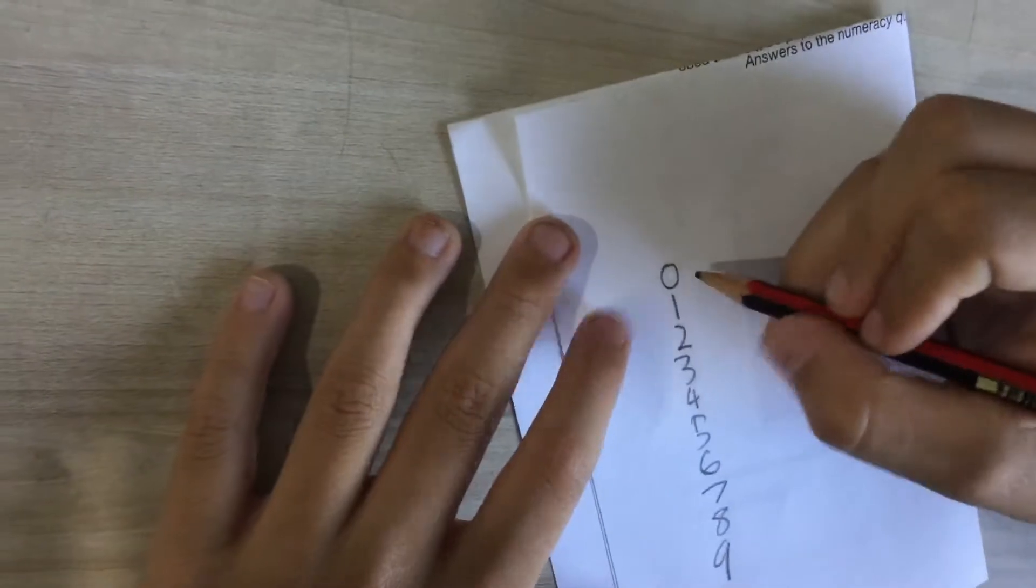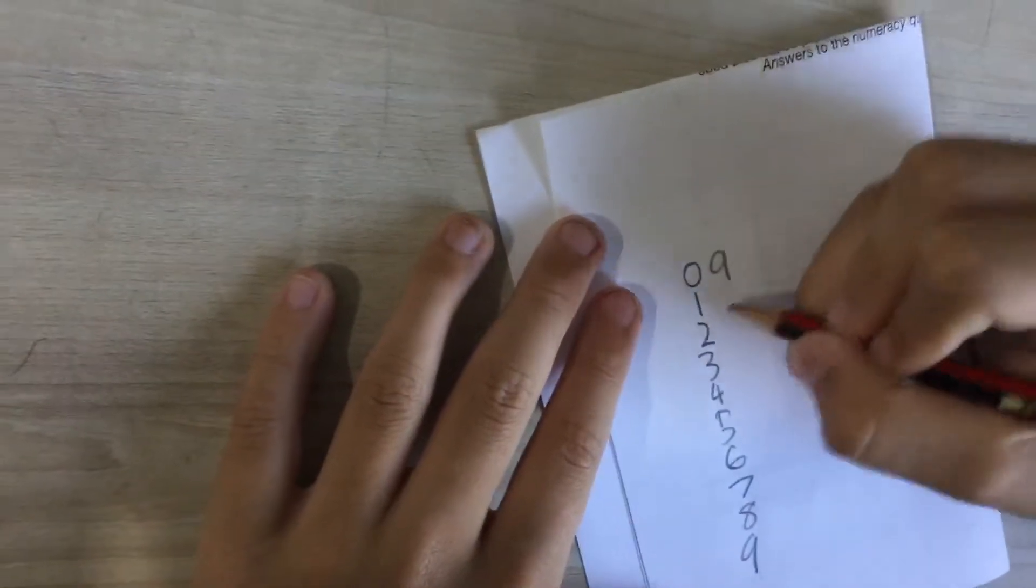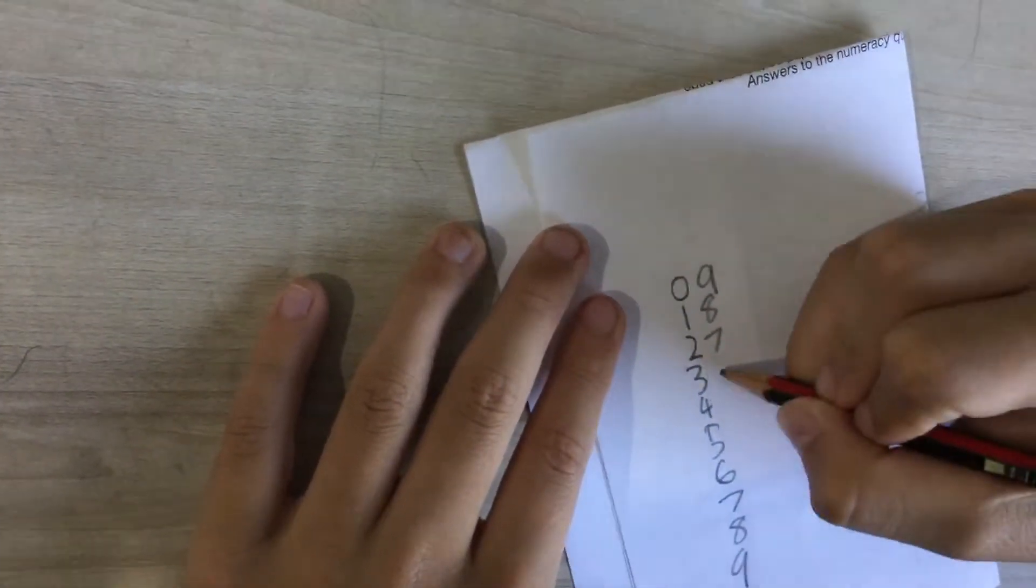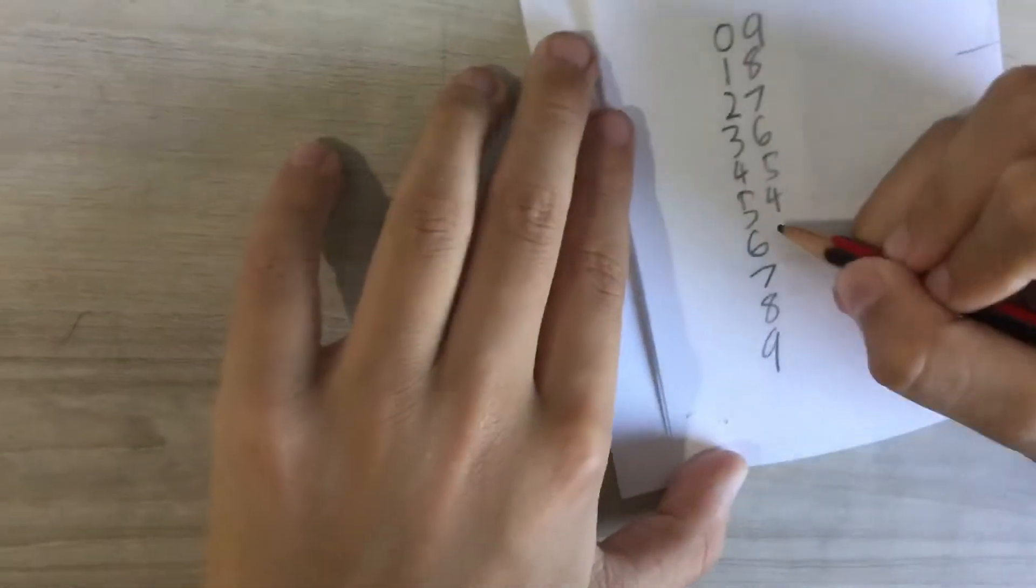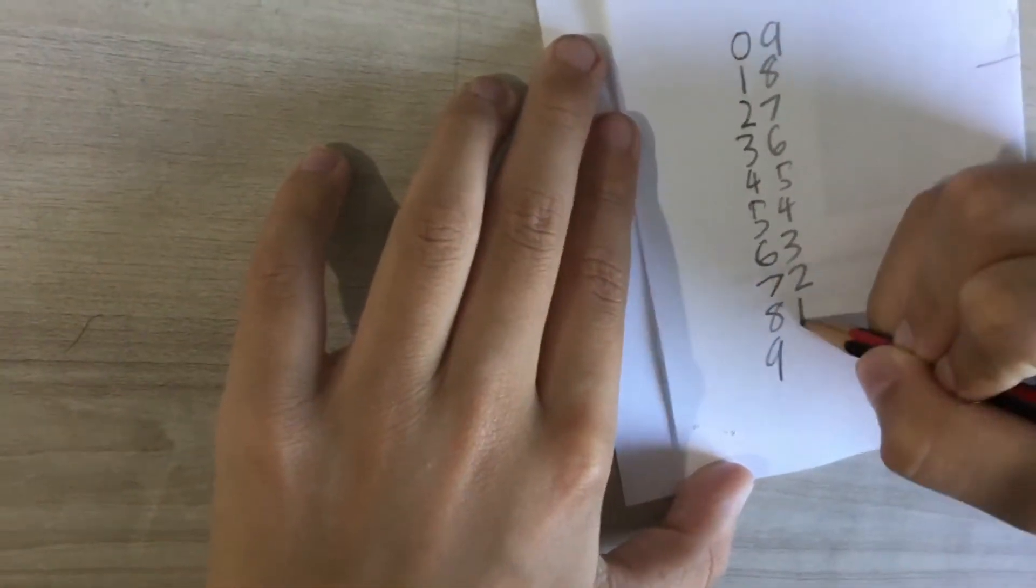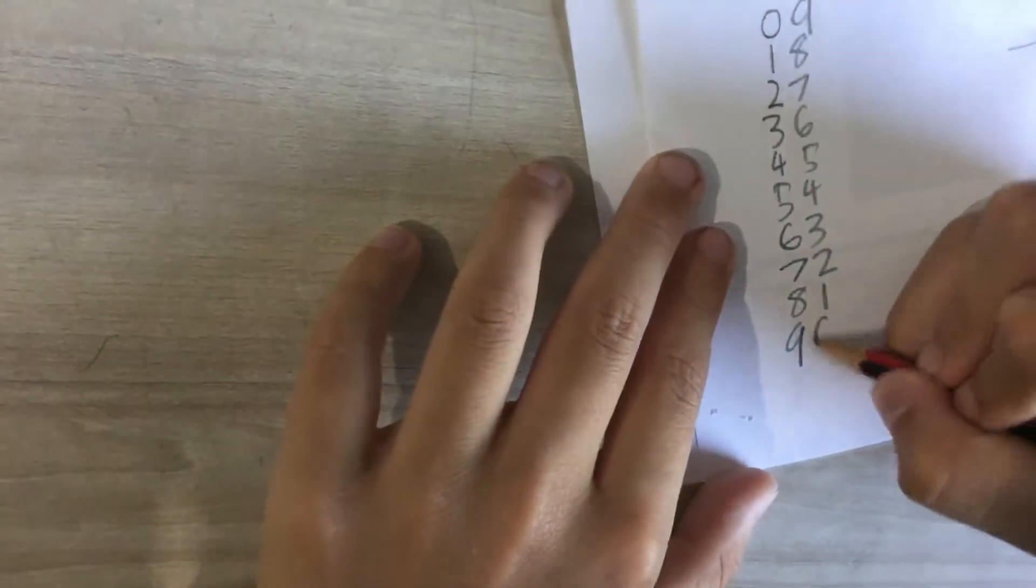Then what you want to write is the opposite. 9, 8, 7, 6, 5, 4, 3, 2, 1, and then you start at 0 again.